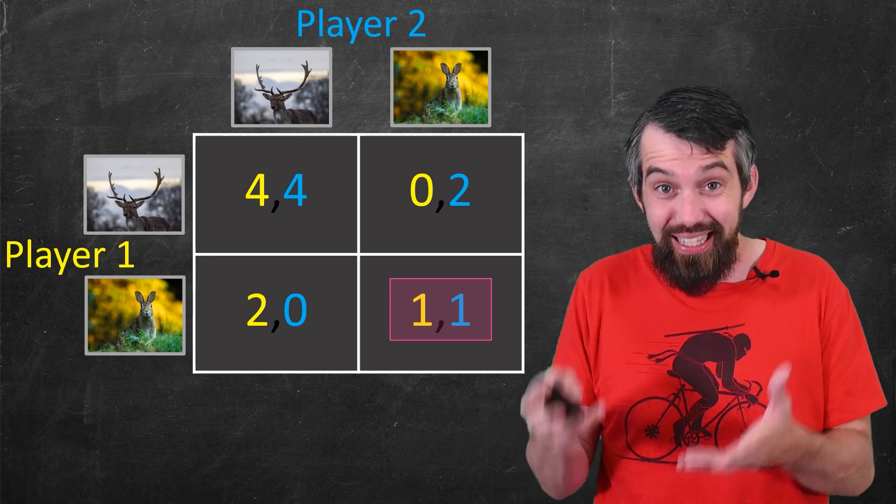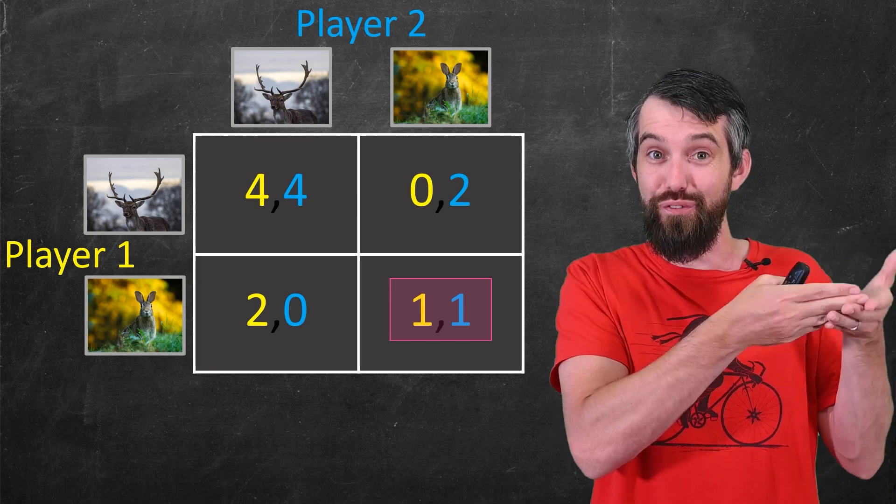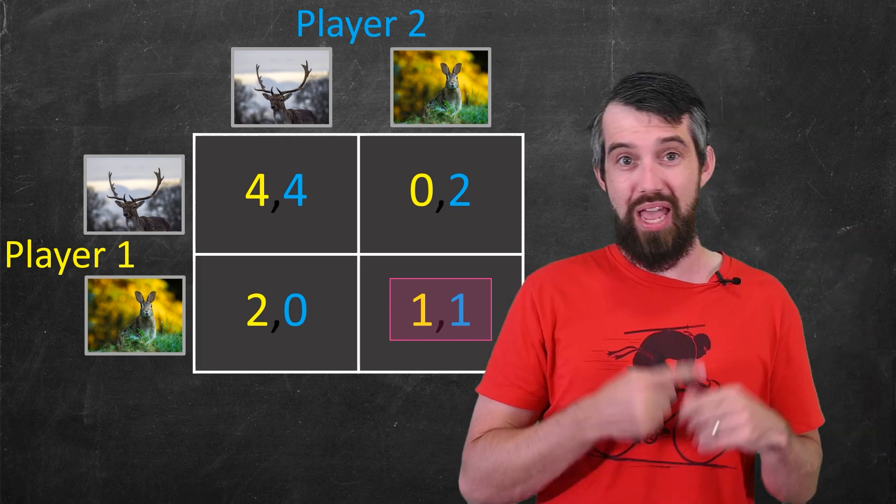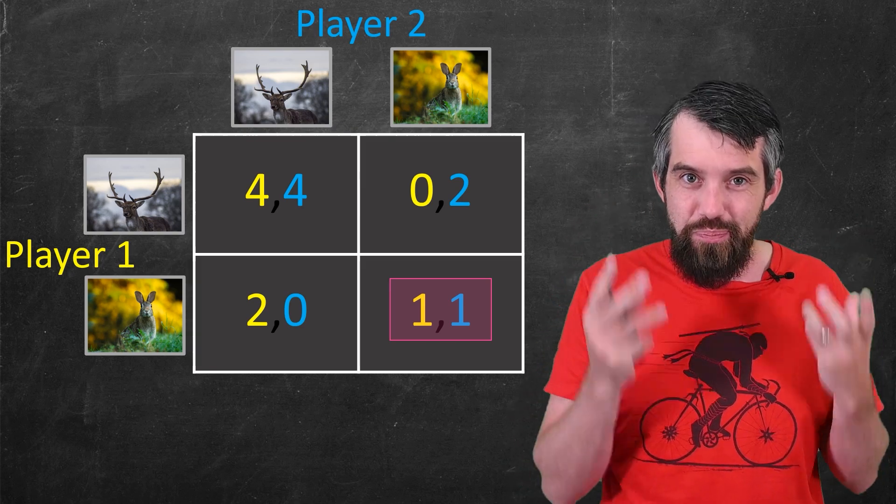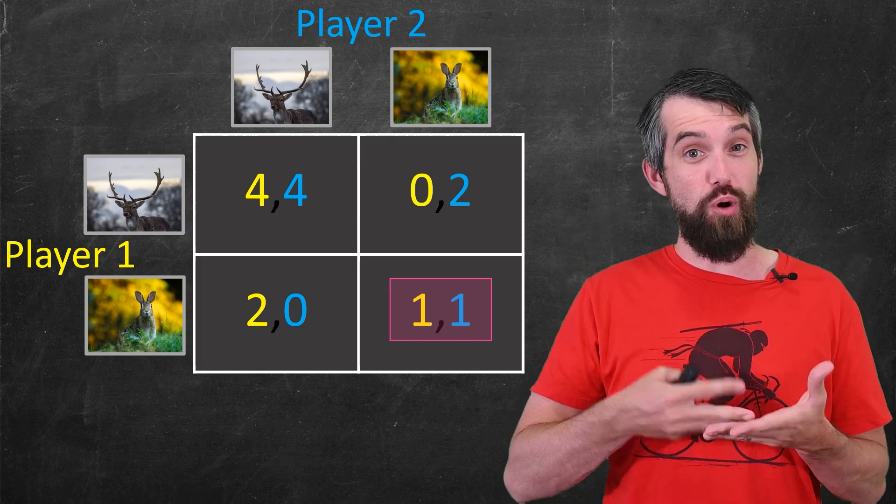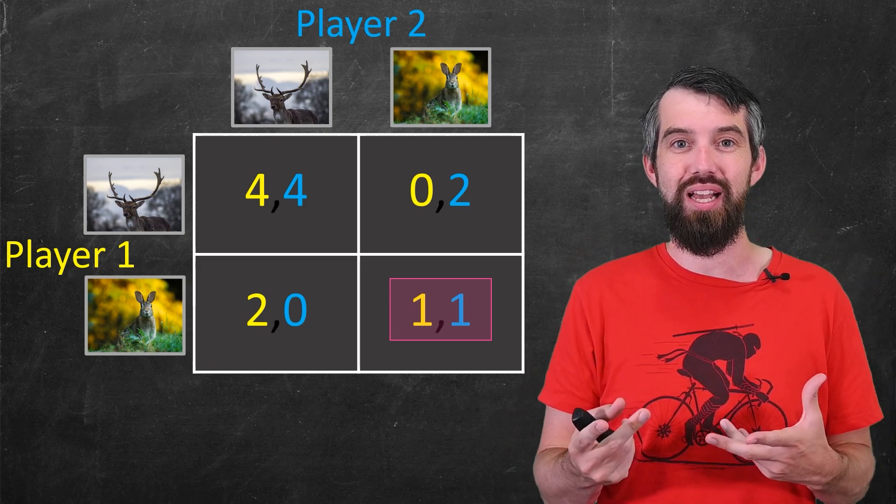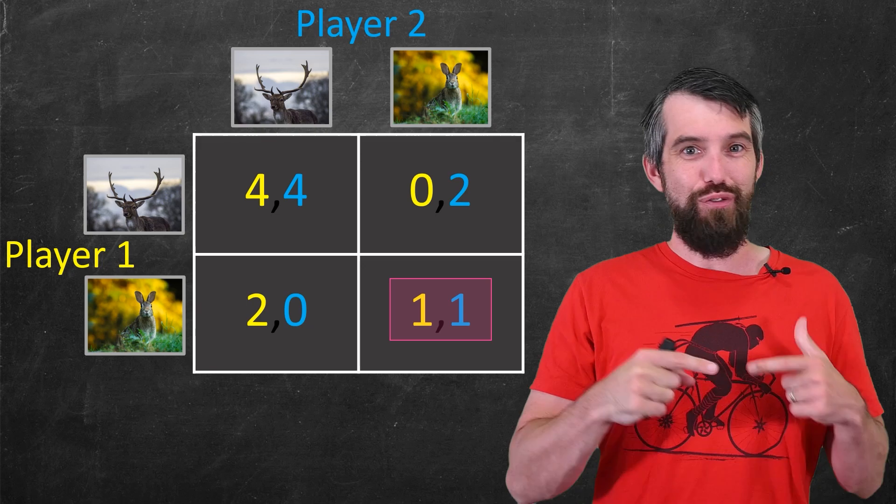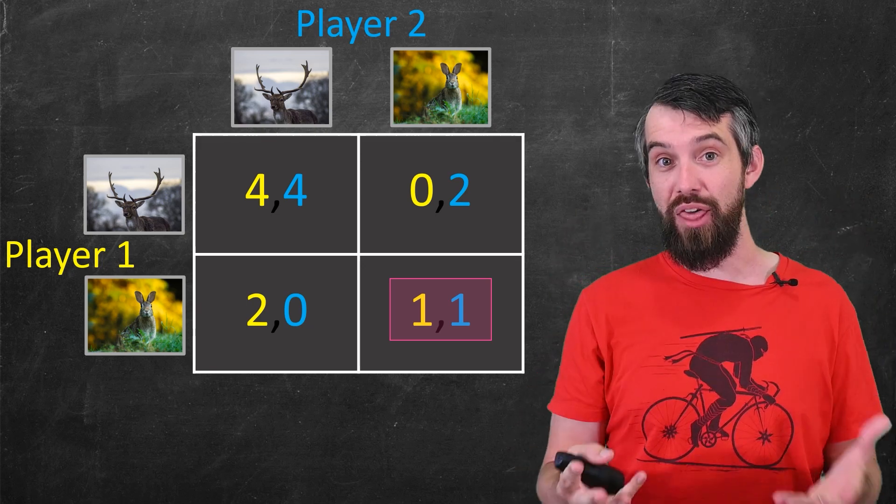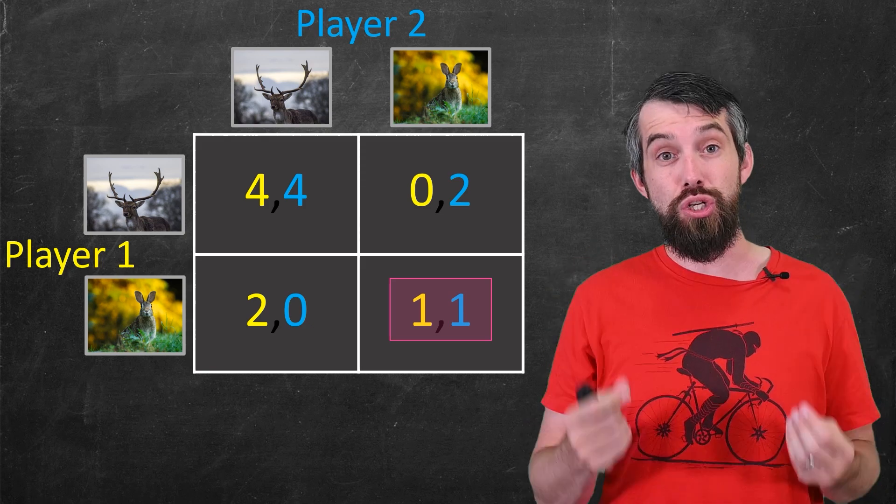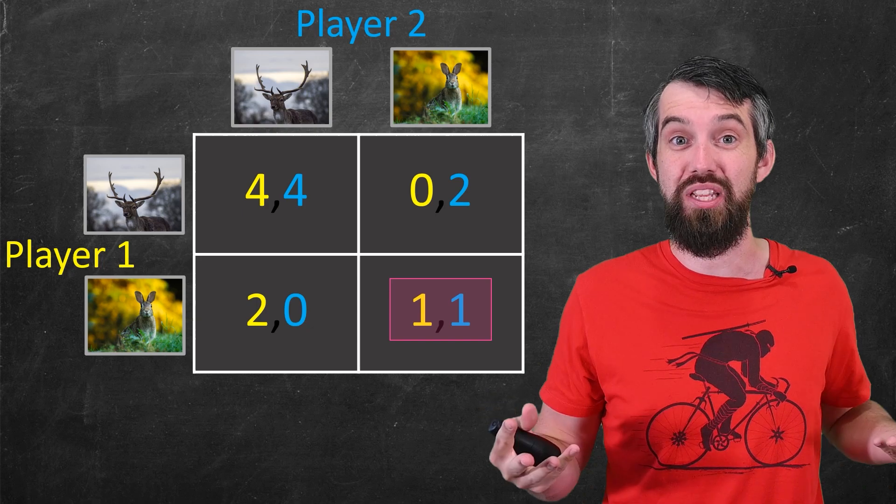You're sort of stuck down here at this less desirable option where both players play hare and both players get a payoff of only one. Ideally, they'd be able to trust each other to cooperate and they could get the 4-4 if they both played stag. That'd be the option with the most payoff at least. But the stability of the option where they both play hare comes about from trying to avoid the risk of ever getting 0. Of avoiding a scenario where you play stag and they play hare and now you're just getting nothing. So there's actually these two different Nash equilibria. Well, which is better? Which should we choose?